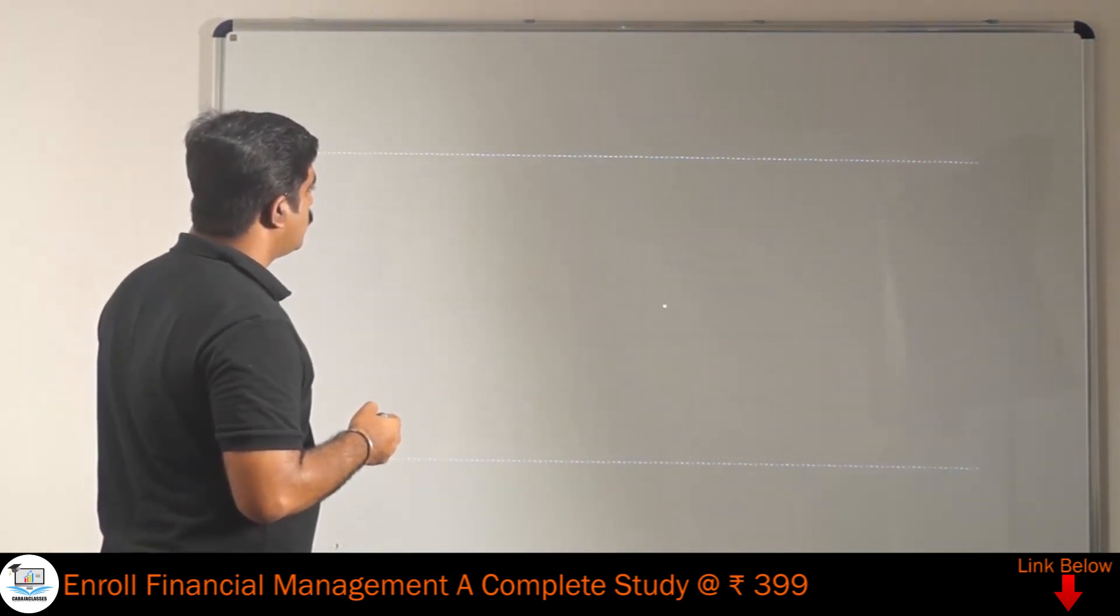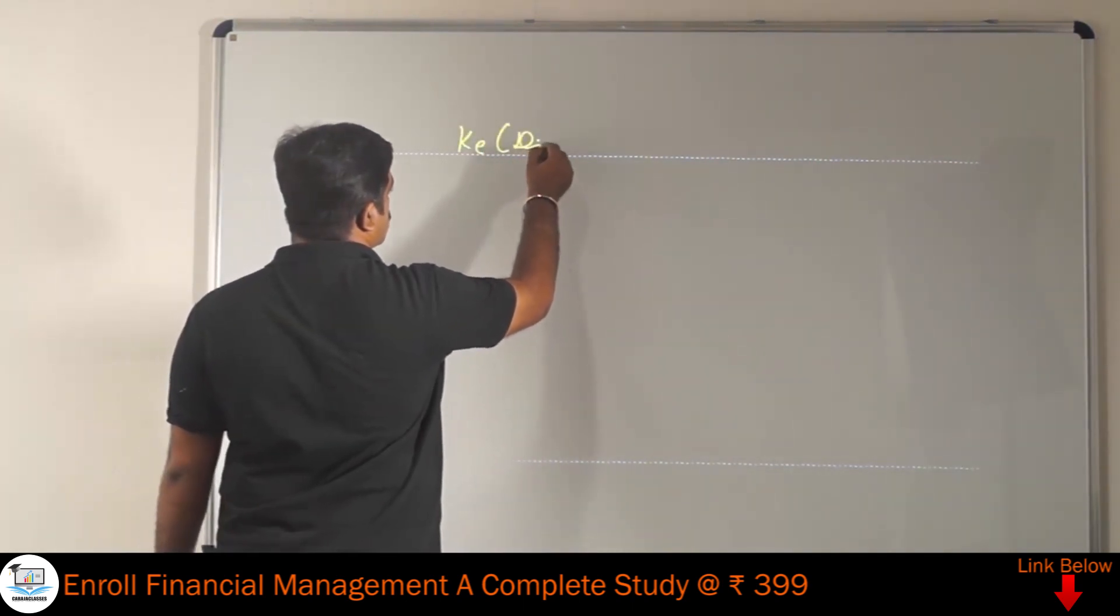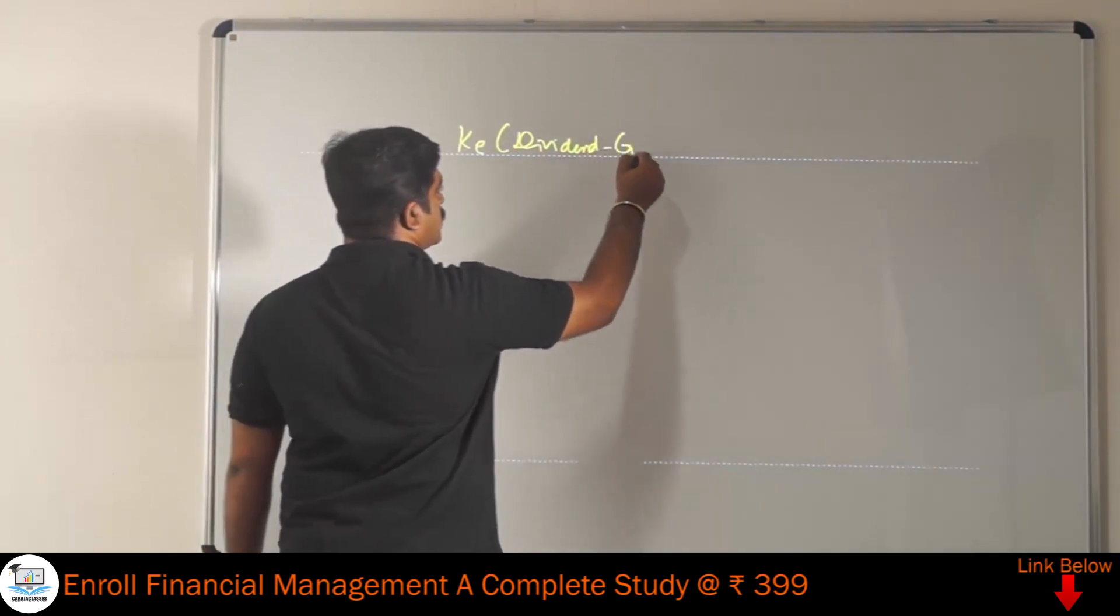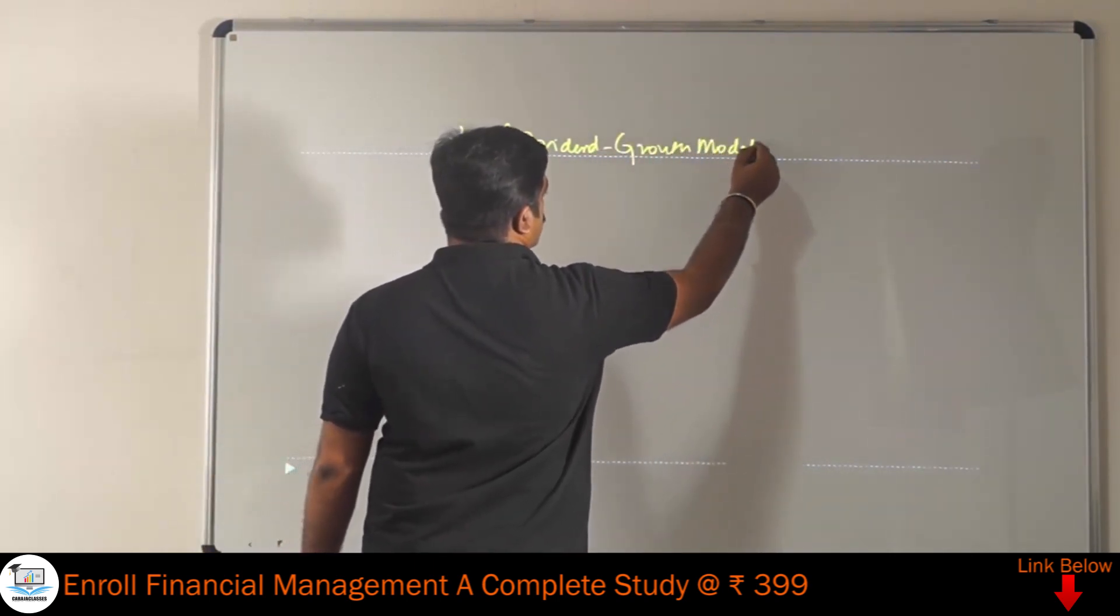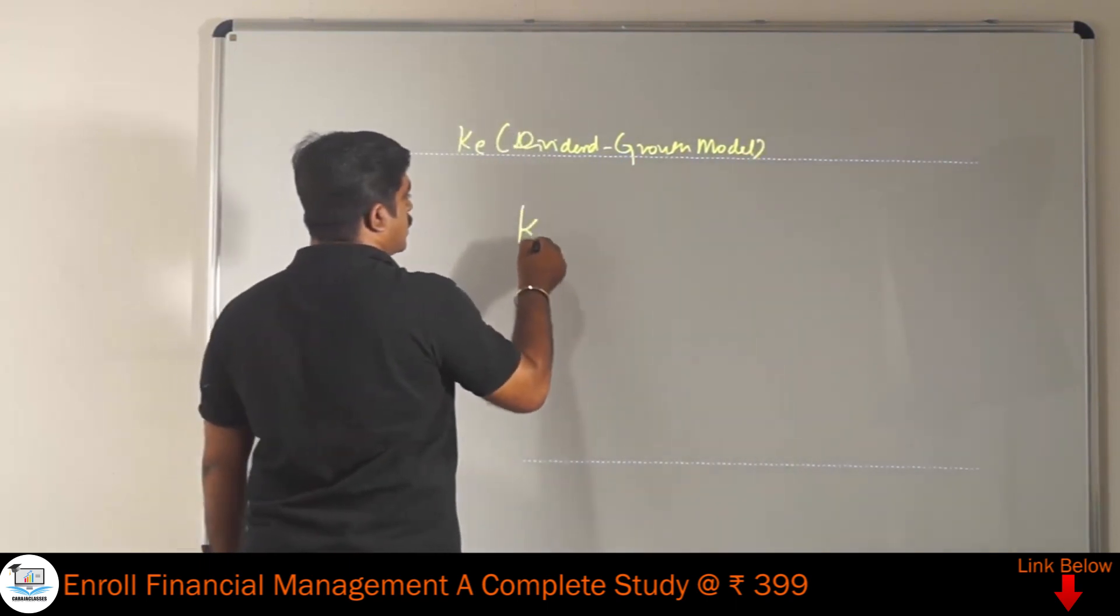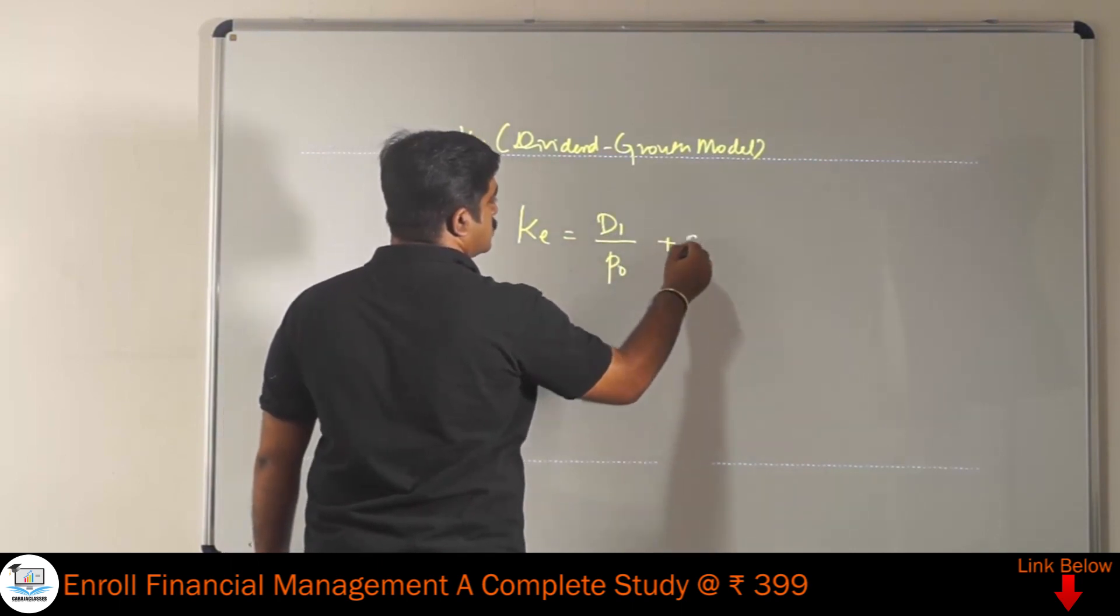Now let us see the formula for cost of equity dividend growth model. In case of growth model, the formula is: KE equals D1 divided by P0 plus G.